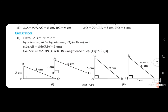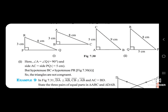Second case mein: Angle A 90 degree hai, toh saamne angle Q 90 degree hai. AC 5 hai aur PQ 5 hai. But BC 9 hai aur PR 8 cm hai. So angle A equals angle Q equals 90 degree — wo toh equal hai. Side AC equals PQ equals 5 cm — wo side equal hai. But hypotenuse BC equals 9 hai aur PR equals 8 hai, toh yeh dono equal nahi hain. But hypotenuse BC is not equal to hypotenuse PR. So the triangles are not congruent — toh yeh triangle congruent nahi hain.